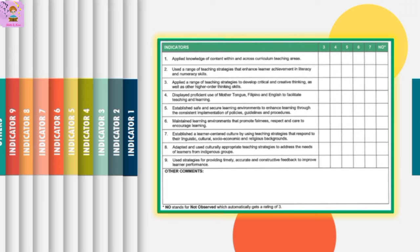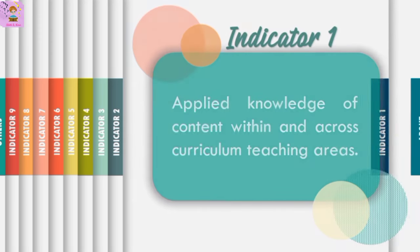As presented here, we have the arrangement of the classroom observable indicators for school year 2023 to 2024. We are now in year two and there are nine indicators to cover for the whole school year, of which six will be covered every quarter. The first and third quarters cover objectives one to six, while the second and fourth quarters cover objectives one to three and seven to nine. Rest assured that I will provide examples to guide you in the preparation of your classroom observation and to help you get the highest possible score of seven.